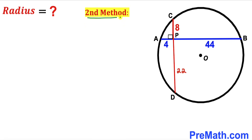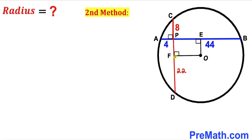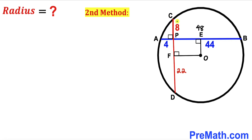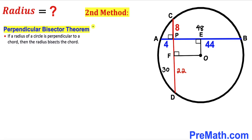Now for the second method. I have dropped perpendicular OE onto chord AB, and likewise perpendicular OF onto chord CD. The full length of chord AB is 4 plus 44, which gives 48 units. The full length of chord CD is 8 plus 22, which gives 30 units.